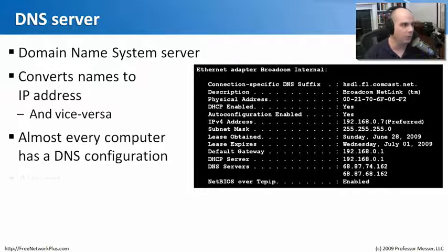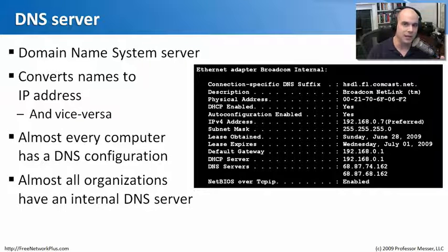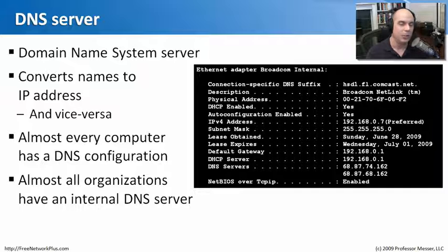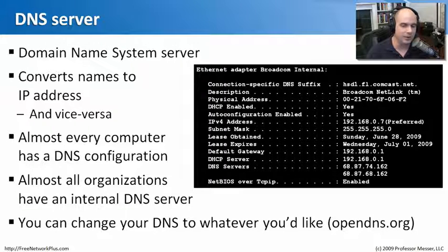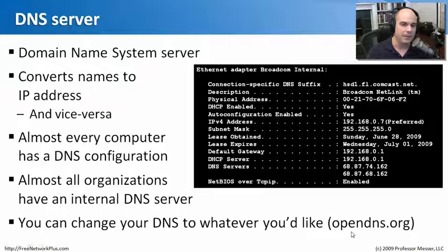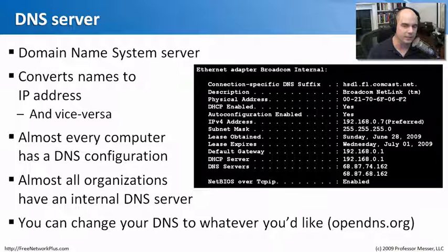In large organizations, you almost always have internal DNS servers for internal devices, and you may also have an external DNS server or multiples for redundancy. You can use DNS provided by your provider, use internal DNS, or change it to whatever you'd like. At home I use OpenDNS, which provides URL filtering — you can assign what people in your home can access based on content. It uses DNS technology to understand where people are going and allow or disallow access based on the names typed into websites.